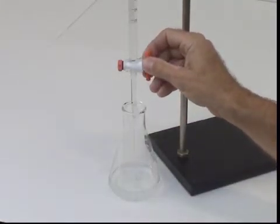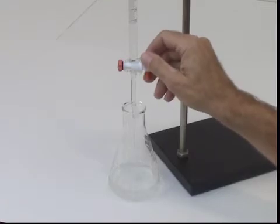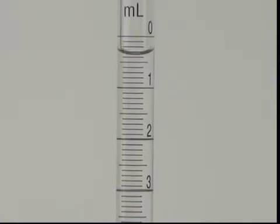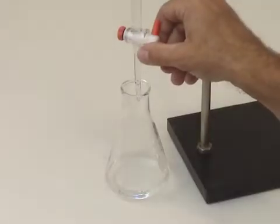A good titration should have a volume of around 15 to 20 milliliters. So we can add most of that volume in one large portion. Open the stopcock fully and allow 10 to 12 milliliters to drain in.